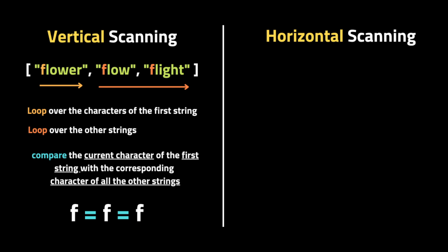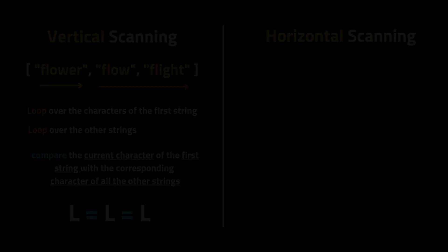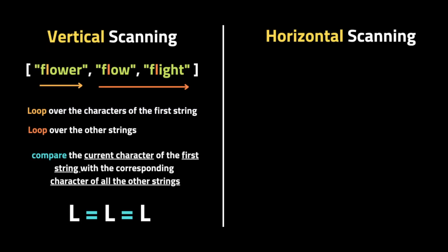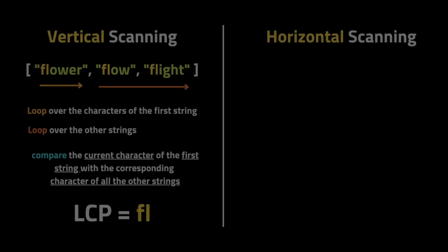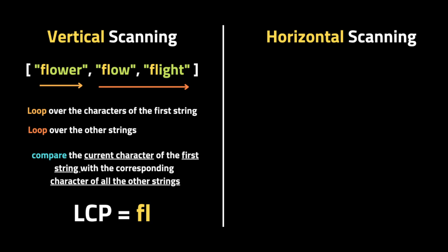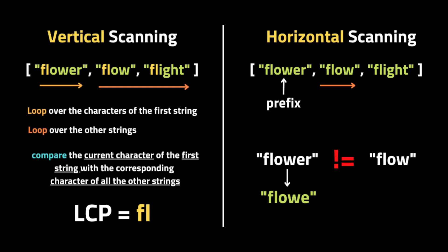We use two nested loops. The outer loop iterates through the first string, and the inner loop iterates through all other elements of the input list — 'flow' and 'flight'. We compare the first character 'f' to the first character of 'flow' and 'flight'. The first common character is 'f'. We move to the next character 'l', check if the other strings have the same character, and so on. Once we hit a case where characters are not the same, we return the current common substring, which is the longest common prefix — in this example, 'fl'.